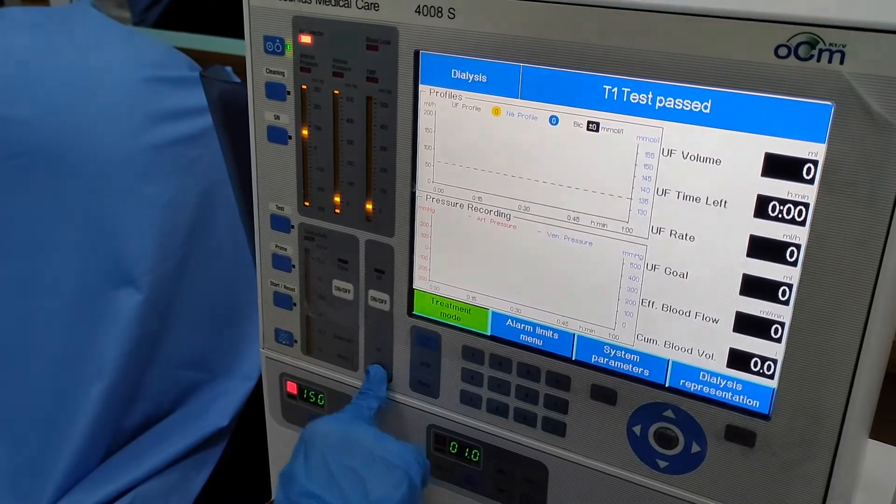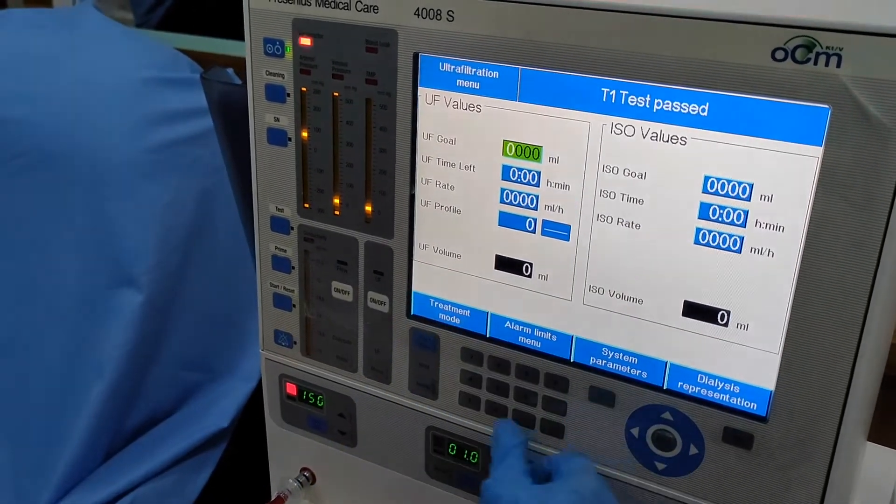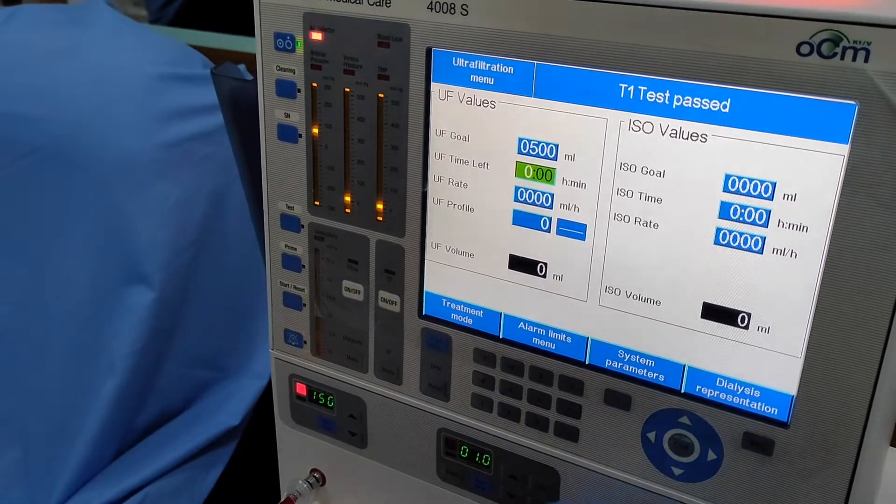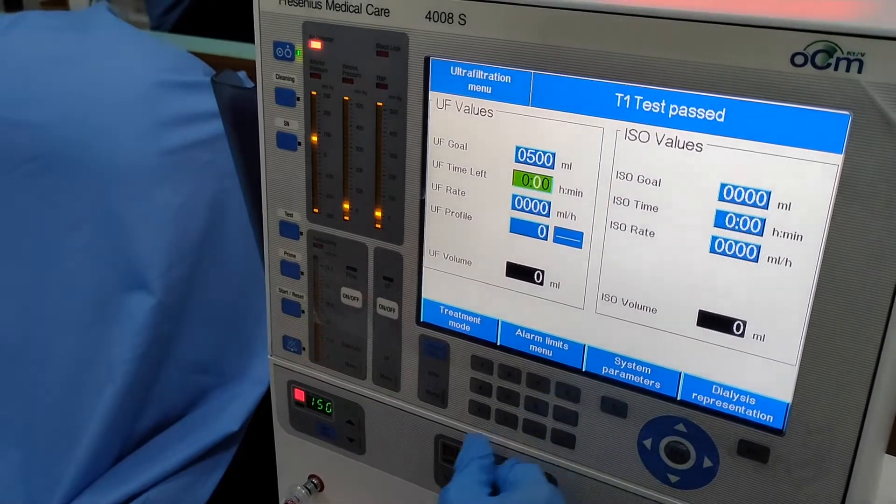Press the menu button, which is right below the UF button. For the echo priming, set 500 ml for 10 minutes if dialyzer is being reused, whereas 300 ml for 6 minutes if brand new.